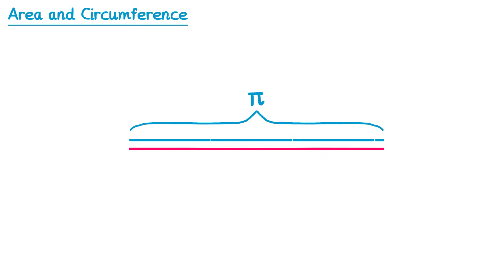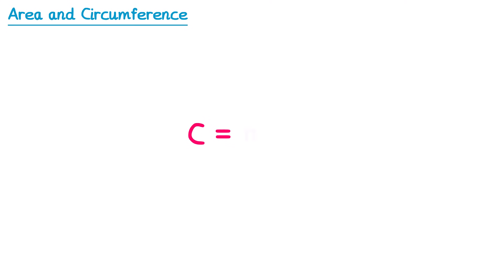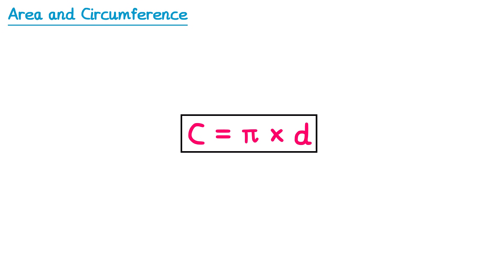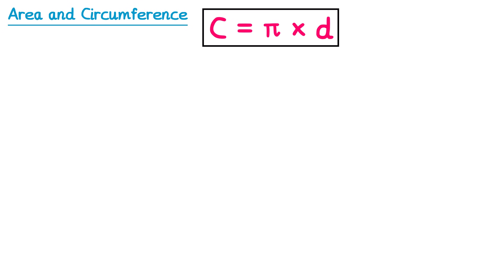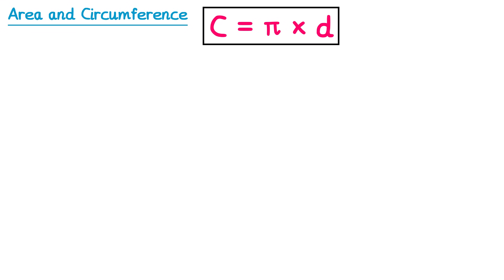So we could say that to find the circumference of the circle, we need pi lots of the diameter. We could write that down in a formula: to find the circumference of the circle, we need pi lots of the diameter.